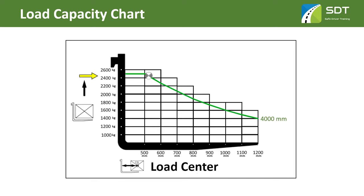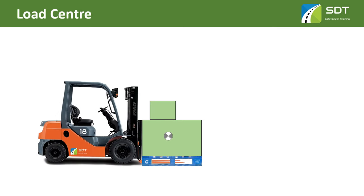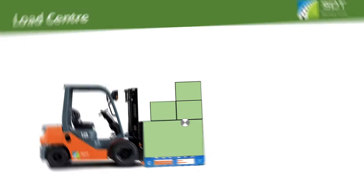The longer the load center, the less weight you can carry. This means that the further the load is from the face of the forks, the less the forklift can lift before tipping forwards. And now let's put your knowledge to the test — I have prepared some examples for you, comment down below how many of them you got right.